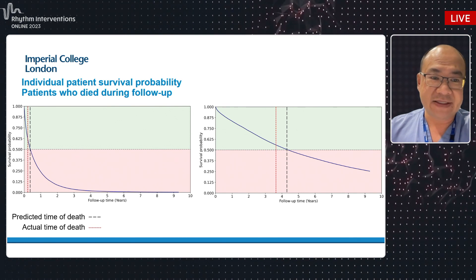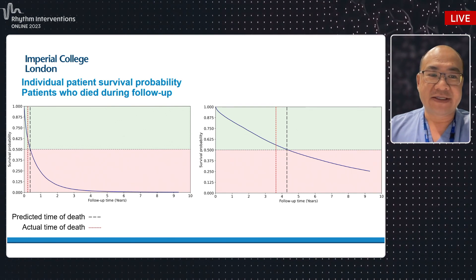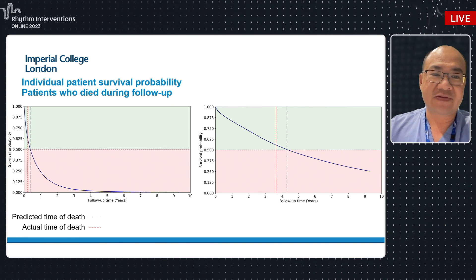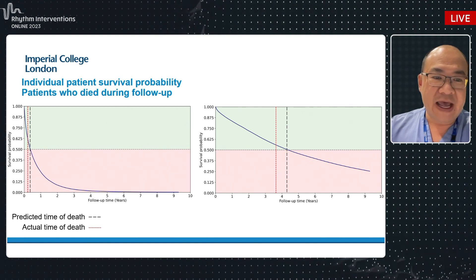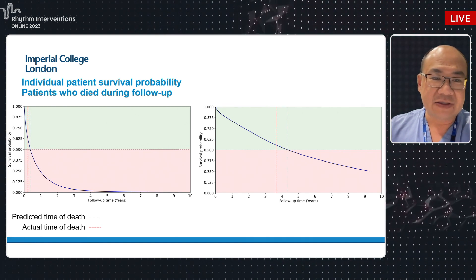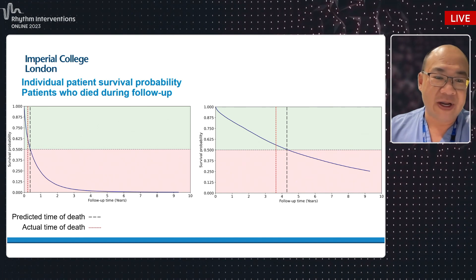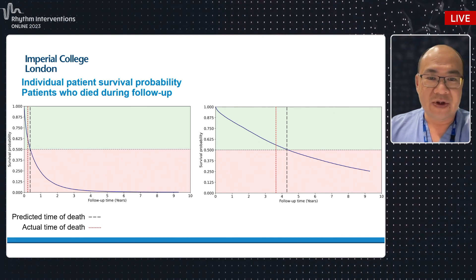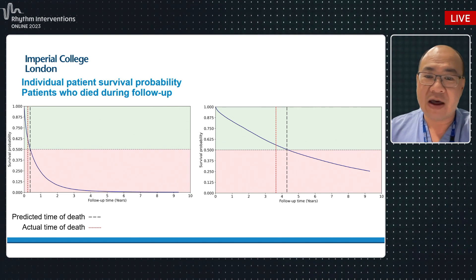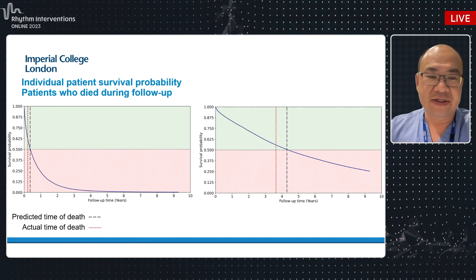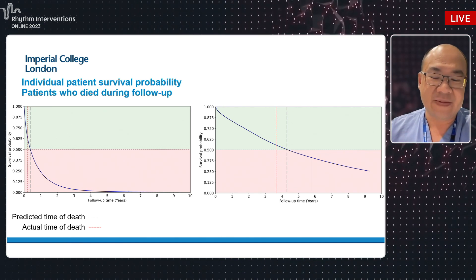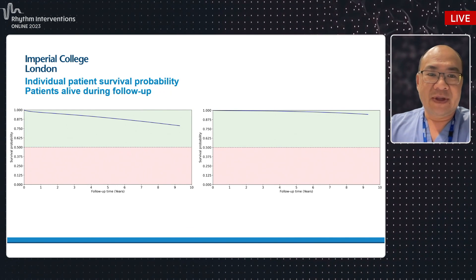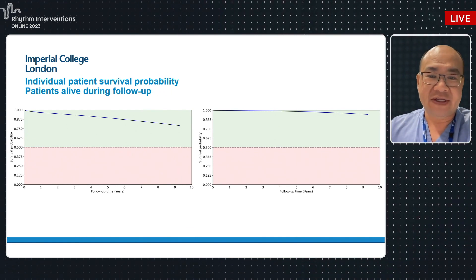The outputs look like this: these are two individuals, each with an individualized survival curve based on a single ECG. The individual on the left was predicted to die at around six months and indeed died around four months. On the right, an individual predicted to die at around four years died just before four years. The model gets it very close — not just whether someone will be dead or alive, but when they might die.